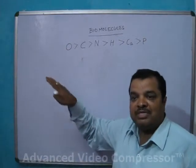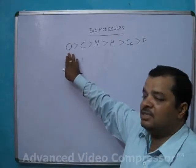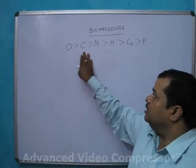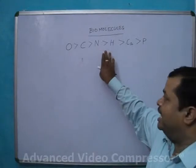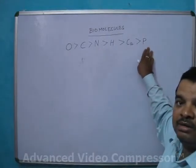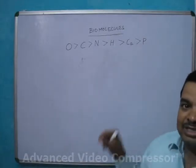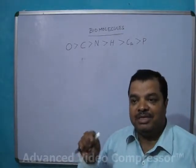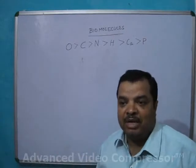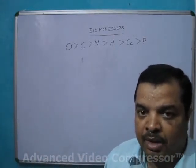So the sequence in living beings on the basis of percentage is: Oxygen is most, then Carbon, Nitrogen, Hydrogen, Calcium, and Phosphorus. In the earth crust, the percentage of Calcium is higher compared to living beings.